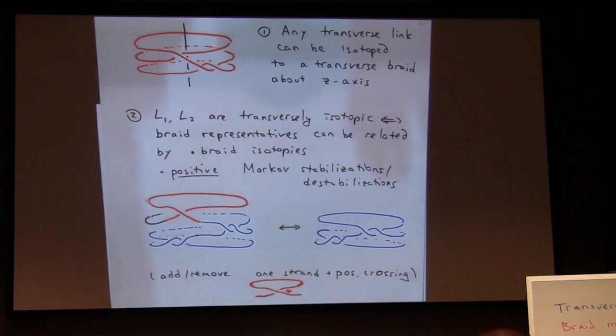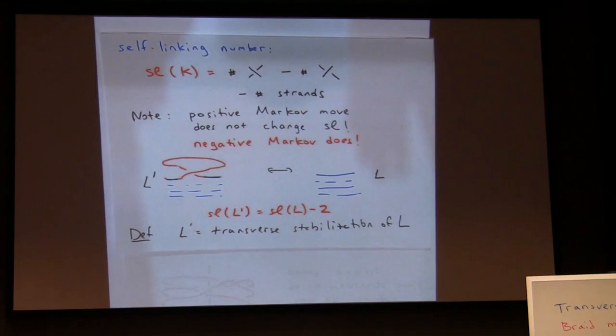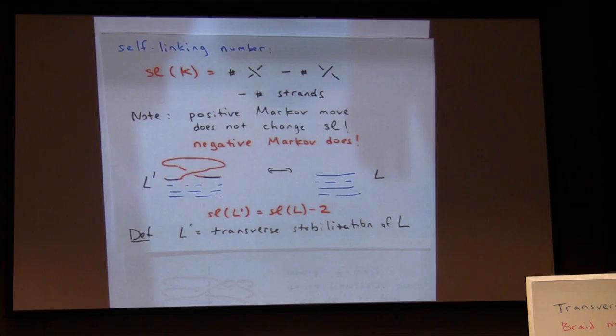The self-linking number is the invariant computed from the braid representation: you count the number of positive crossings minus the number of negative crossings minus the braid index. A positive Markov stabilization adds one strand and one positive crossing, so this does not change the self-linking number. On the other hand, a negative Markov stabilization adds one strand and a negative crossing, so the self-linking number goes down by two. The new transverse link in that case is called the transverse stabilization of your original link.